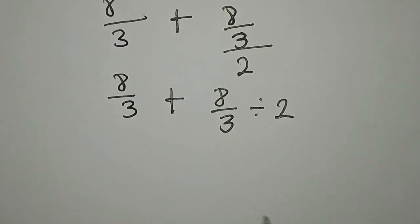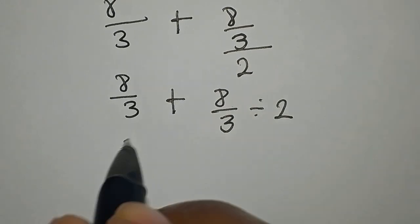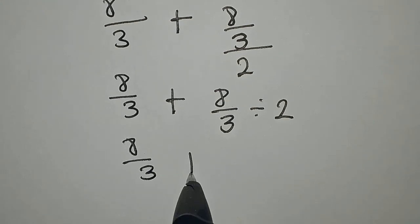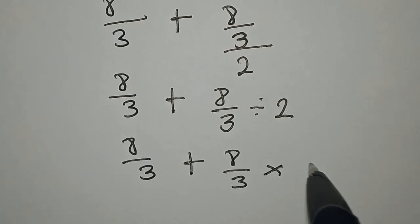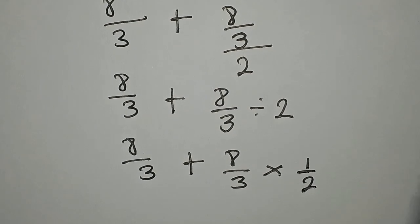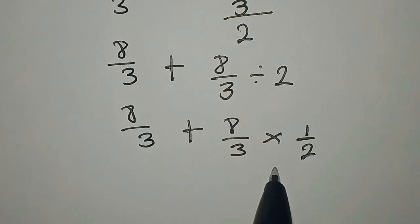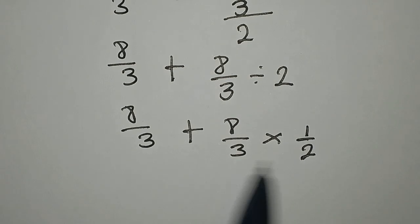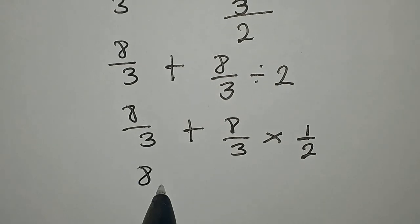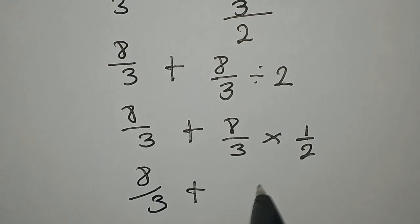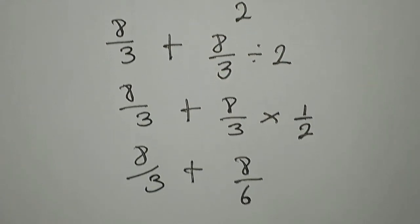Then we turn this to multiplication: 8/3 plus 8/3 times 1/2. And BODMAS says we should multiply this first. So 8/3 plus 8/6 is what we have here.